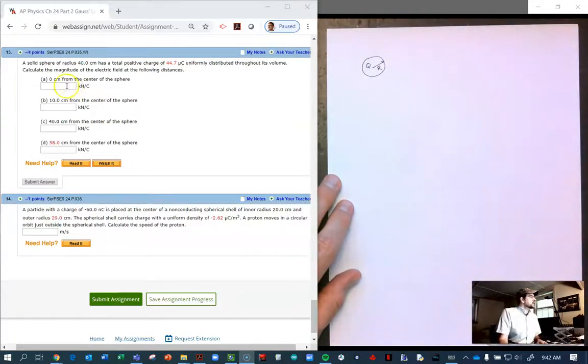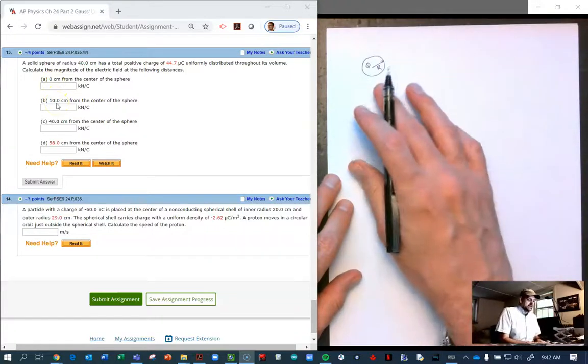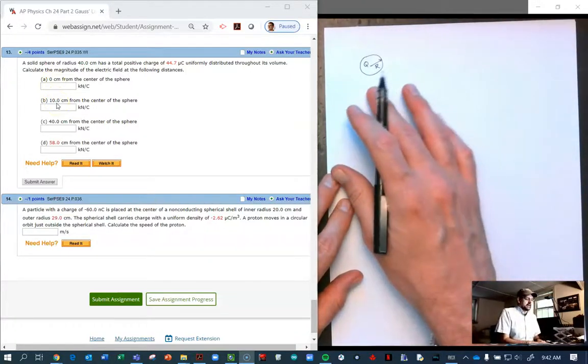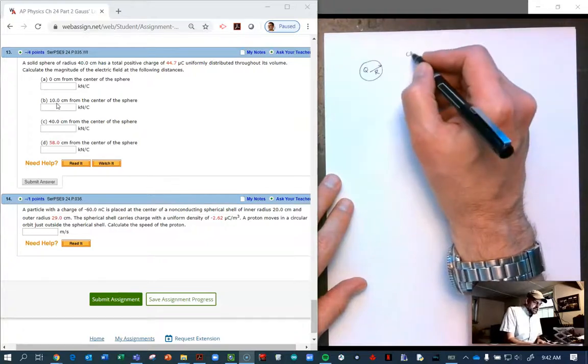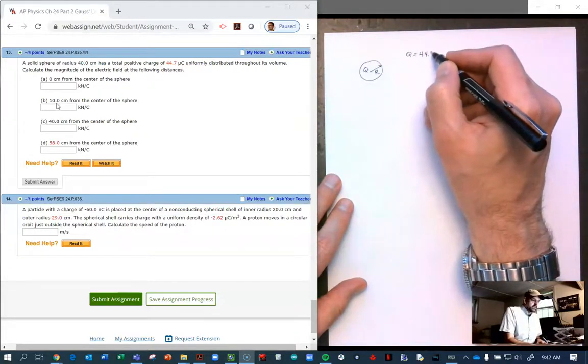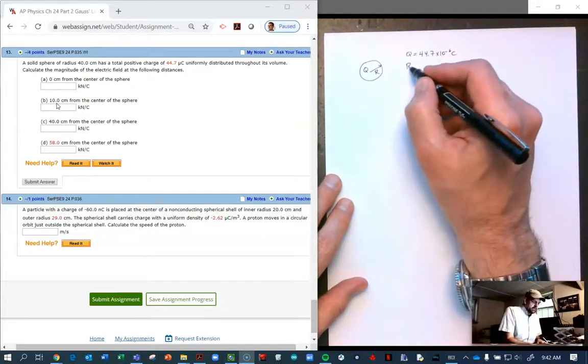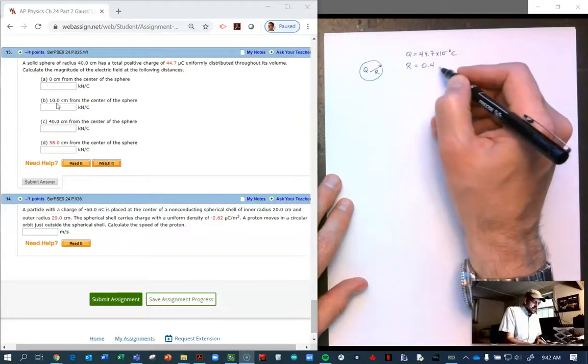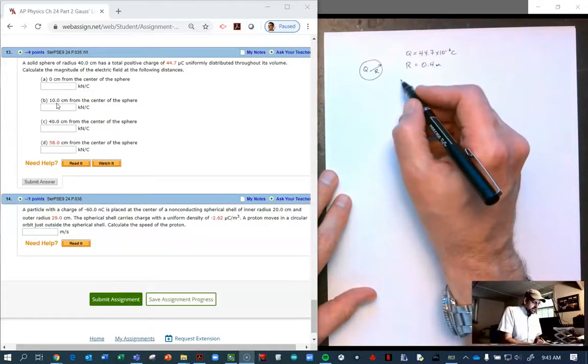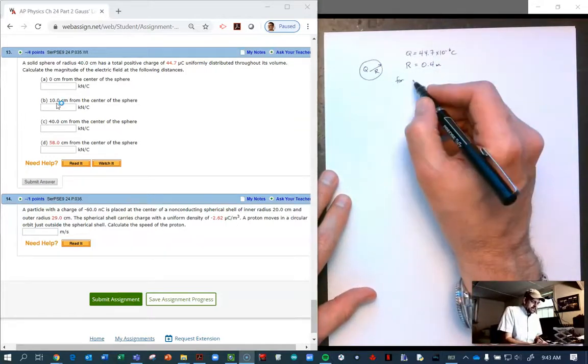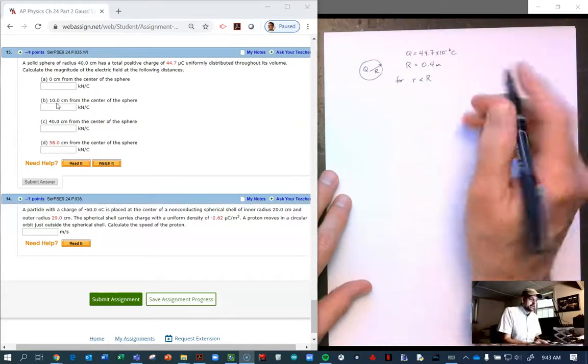So the first questions ask about 0 and 10 centimeters, which is inside my particular insulator. So we're just going to list some values here. We know that Q for me is 44.7 times 10 to the minus 6 Coulombs, and that the big radius is 40 centimeters, 0.4 meters. And so we're going to first look for the conditions where little r, the radius of our Gaussian, is going to be less than big R.